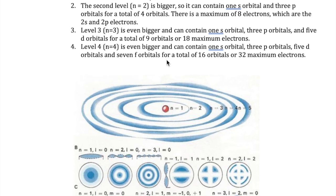In level four, we can have all four different types of orbitals: S, P, D, and F. There is one S, three P's, five D's, and seven F's. This gives us a total of 16 orbitals, or a maximum of 32 electrons, since each orbital can have two electrons.